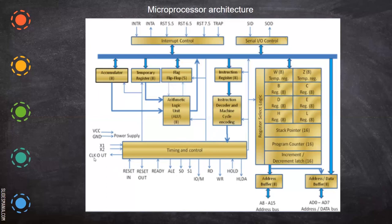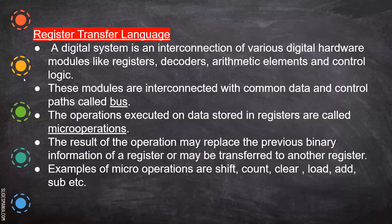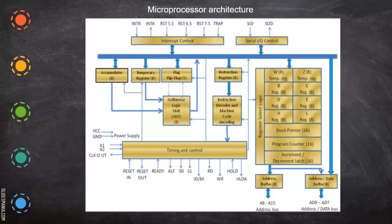It also has power supply and crystal, which are used for generating the clock signals. In general, these are all the main registers which are in the CPU — in the central processing unit — other than the memory unit. All these are interconnected to the internal bus, and they are connected with the external bus to the memory unit. So, anything which has to be executed in the CPU must first be brought into these temporary registers — whichever temporary register is mentioned in the instruction set — and from there only the ALU can access and perform the operation.